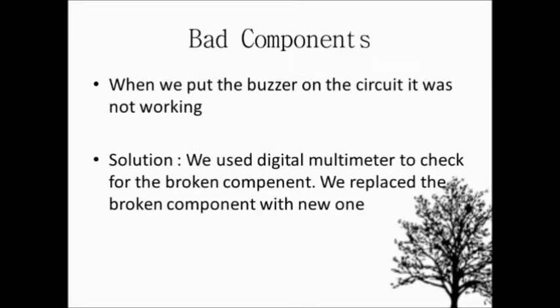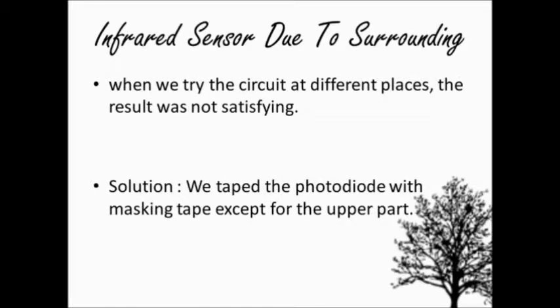Third problem, bad component. When we put the buzzer on the circuit, it was not working. The solution, we use digital multimeter to check for the broken component. We replace the broken component with the new one. Last problem, infrared sensor problem due to surroundings. When we try the circuit at different places, the result was not satisfying. The solution, we tape the photodiode with masking tape except for the upper part.